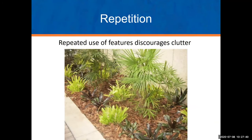When we look at repetition, we talked about doing that with mass plantings — Coontie cycads are really good for this. The reason we do that is to discourage clutter in the landscape. It's fine to have fun focal and specimen plants, but they really get lost in the clutter if you don't have those repeated plantings. It's important that you do a little bit of repetition in the landscape.